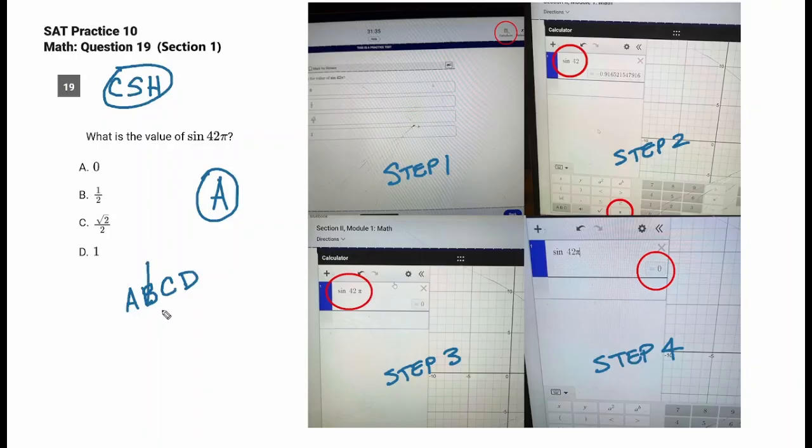A half is nice and normal. This thing, obviously nutty looking. D, one, nice and normal. So if you're going to guess randomly, pick the weird one and guess between A and C. But for the last time, calculator's there.